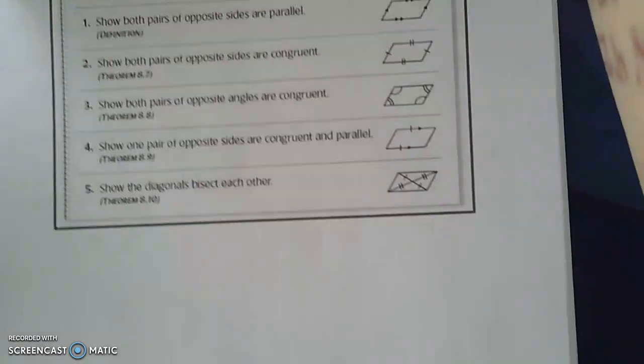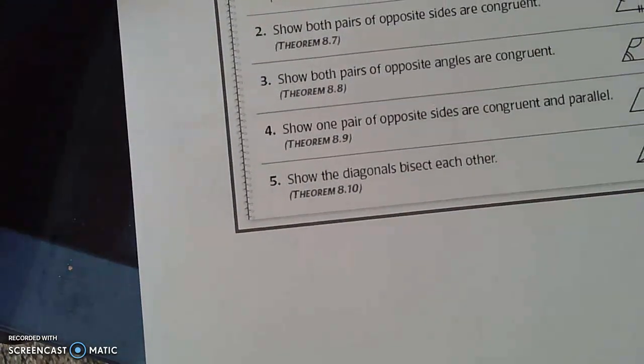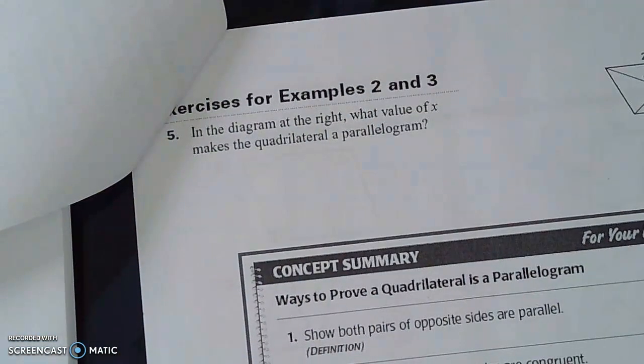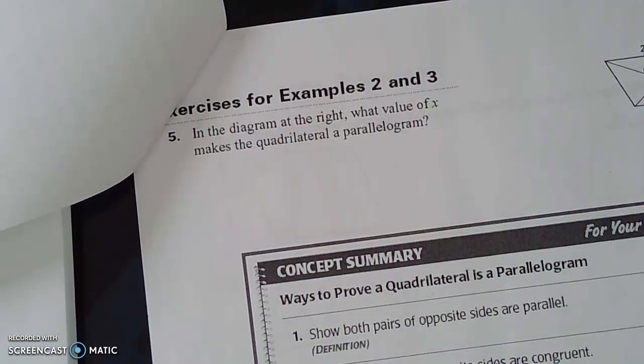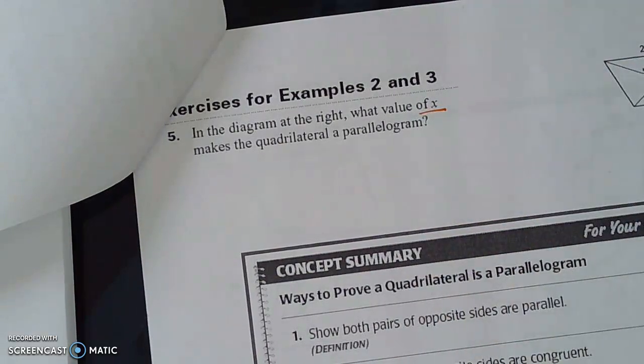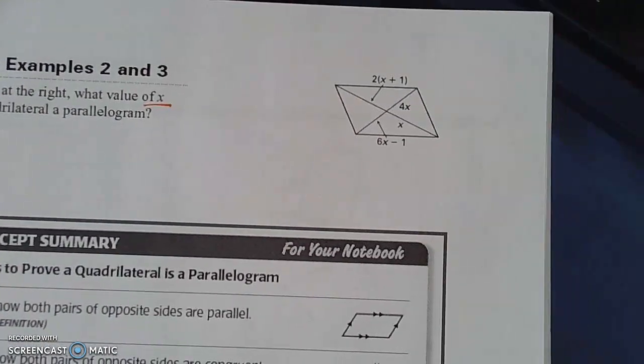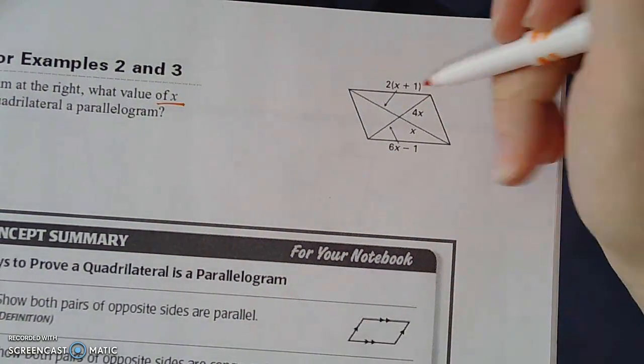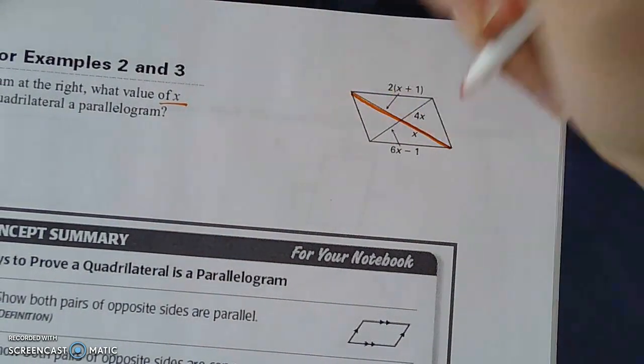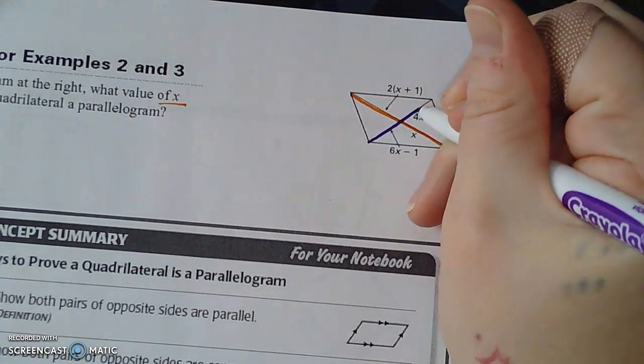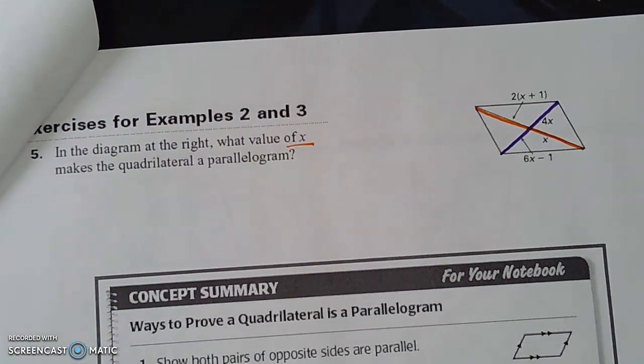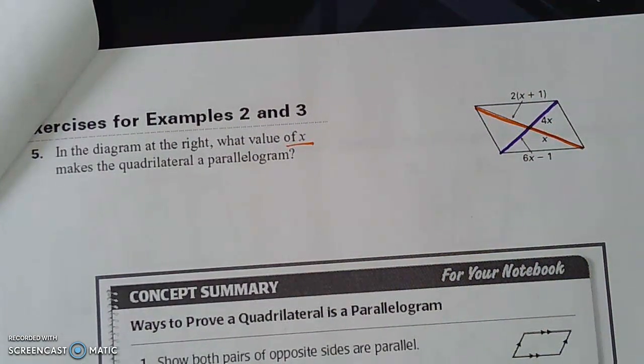So let's go ahead and flip the page. And we have one last example to do. Let me just turn this a little bit more comfortably. Exercises for example 2 and 3. In the diagram at the right, what value of X makes the quadrilateral a parallelogram? So let's check that out. So I'm noticing some diagonals here. I'm also noticing something kind of interesting in that they're using X for both this diagonal, as well as for this diagonal. So we got to figure out what X equals, and then we can plug it in and check if it works for both of these. So I say I'm kind of liking the one that I've outlined in purple. So let's set up an equation with this. I'm seeing 4X, and I'm also seeing an arrow that's telling me 6X minus 1. So 6X minus 1 equals 4X and let's use that.